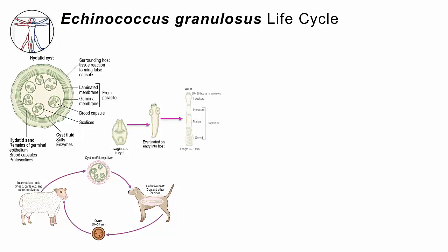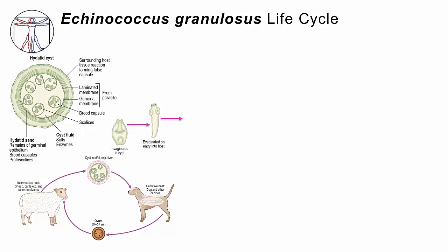It turns into a teeny tiny tapeworm. That tapeworm will mature into a worm that looks kind of like other tapeworms we've talked about, but it's very, very small — less than a centimeter in length when it's done, unlike the others which are many meters long. That worm will stay inside the gut of the dog and produce eggs, which are excreted into the environment. Every time the dog poops, if a sheep comes along and eats grass contaminated by the dog poop, the cyst will form inside that sheep.